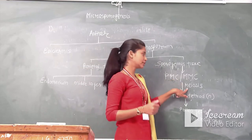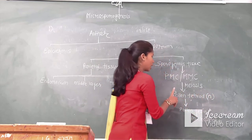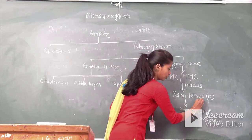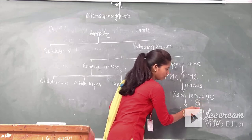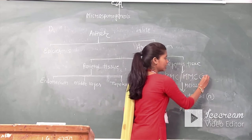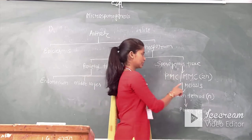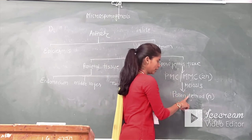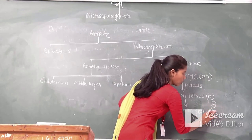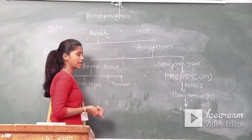This pollen mother cell undergoes meiosis division and forms four haploid pollen tetrads. Out of the four pollen grains in the tetrad, three become non-functional and only one becomes functional. The ploidy condition of the pollen mother cell is diploid — that is 2N. After meiotic division, it will form four haploid pollen grains, out of which three will be non-functional and only the last one will be functional. That functional pollen grain or microspore will act as the functional pollen grain.